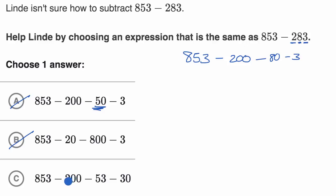What they're doing is they're subtracting out first the 200. That makes sense. And then they're subtracting out 53 and then subtracting out 30. Well, that is the same thing as subtracting out 83, because subtracting 83 is the same thing as subtracting out 53 and then subtracting 30. 53 plus 30 is 83.